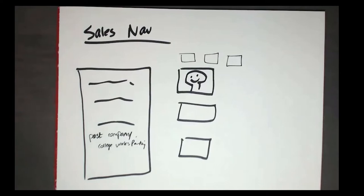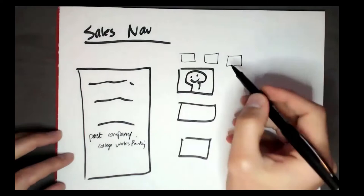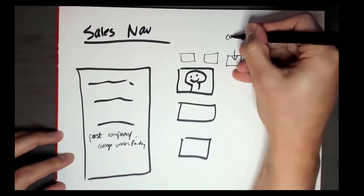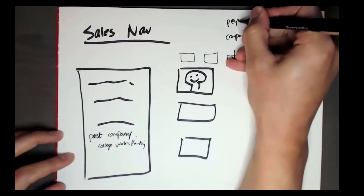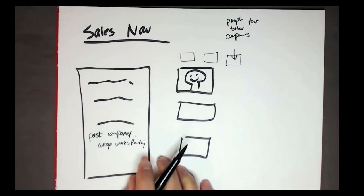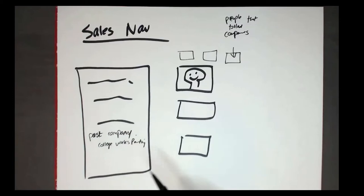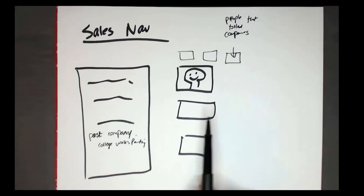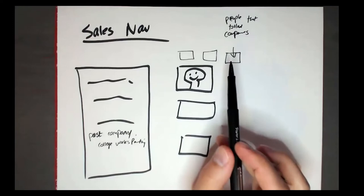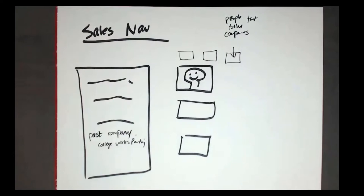The other thing you can do in Sales Navigator — and I'm drawing this out because it loads super slowly on Zoom — is run a normal persona-based search: Chief Revenue Officer, VP of Sales, 500-person company in computer software. Then if you scroll to the very right on the tabs at the top, you can filter for people who follow your company on LinkedIn. If you work with larger companies that have four or five thousand followers on their LinkedIn page, that's another way to get your foot in the door.